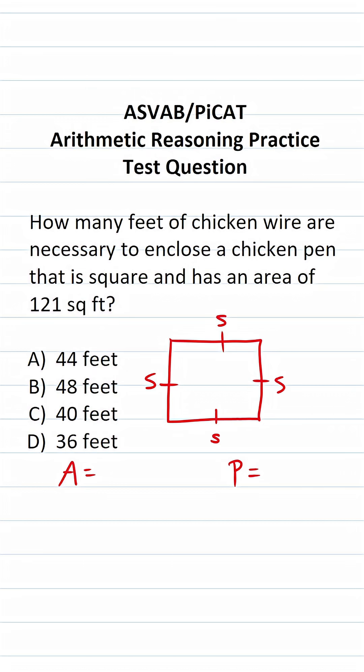The formula to find the area of a square is S squared, that is its side length squared. The formula to find the perimeter of a square is 4 times its side length, that is 4S.